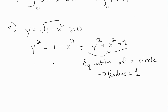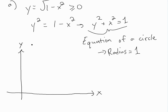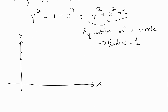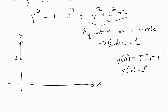Let's draw this out. When x equals zero, y equals the square root of one minus zero, which equals one. When x equals one, y equals the square root of one minus one squared, which equals zero. So we get this curve from (0,1) to (1,0) — it's actually a quarter of a circle.